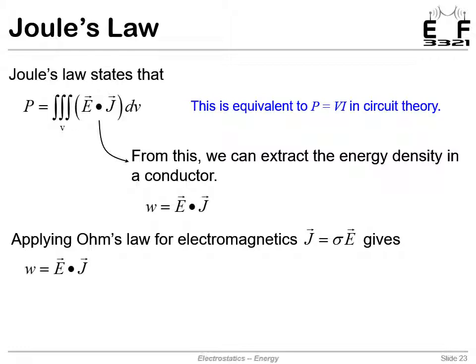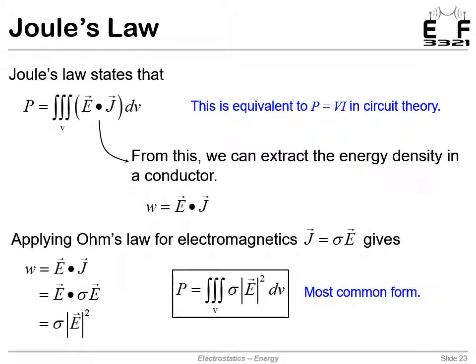Now we have Ohm's law, the electromagnetic version: J equals sigma E, where sigma is the conductivity. Here's our expression for the energy density. We can replace J with sigma E. We have another E having a dot product with itself, and we'll get the magnitude of E squared. That's our energy density in a conductor. We conclude the total power in a conductor—power being absorbed by the conductor—is the conductivity times the electric field squared, the magnitude of the electric field squared. That is the power density. We integrate that up and get the total power. That's the power being absorbed from the electric field inside a medium that is conductive.